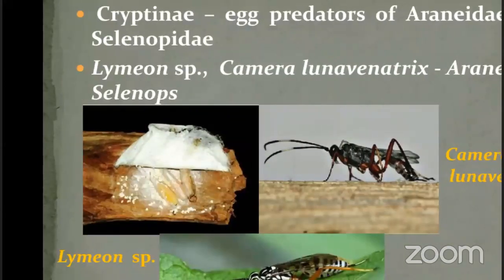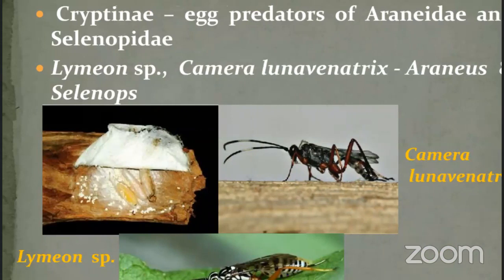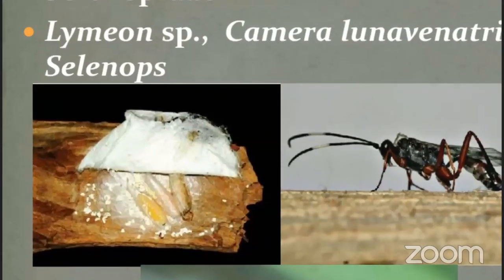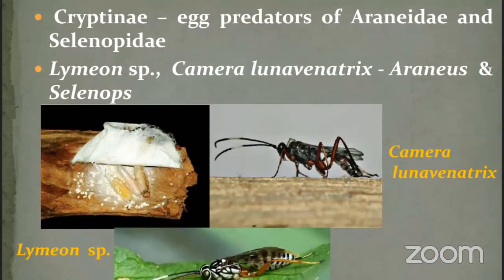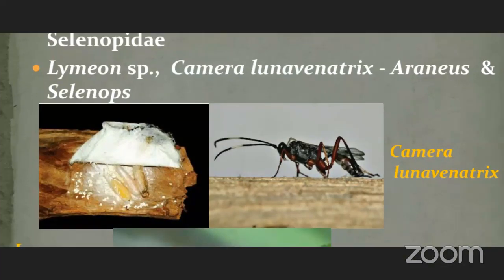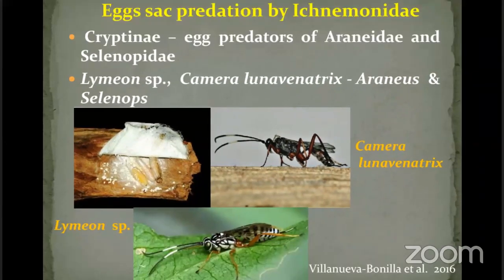The first image shows three larvae developing in the spider egg sacs — the spider egg sacs may contain more than 10 to 20 eggs. The entire egg sac has been consumed by the grubs of hymenopteran ichneumonid parasitoids, where they are acting as predators and not as parasitoids.